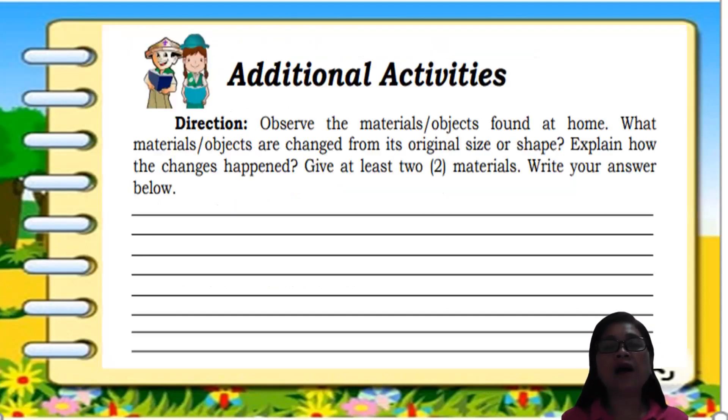You have an additional activity. Direction: observe the materials and objects found at home. What materials or objects are changed from its original size or shape? Explain how the changes happen. Give at least two materials. Write your answer below. I hope you understand our lesson today. Goodbye class and thank you. God bless.